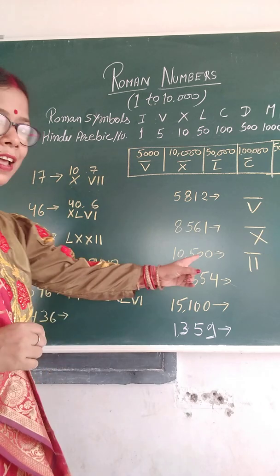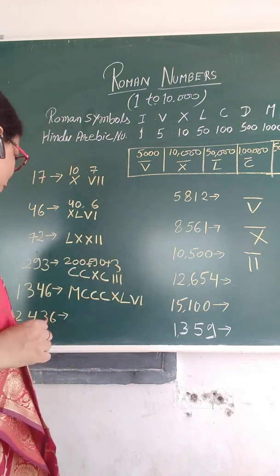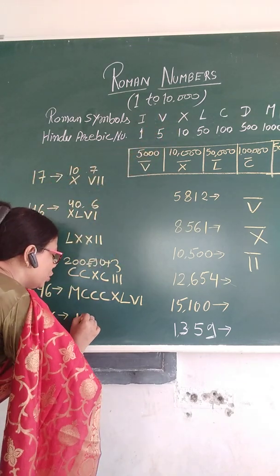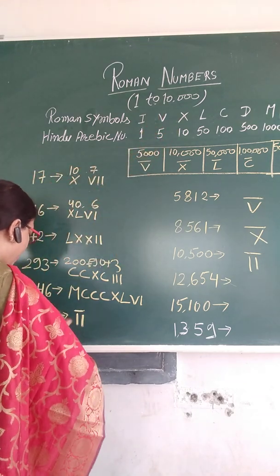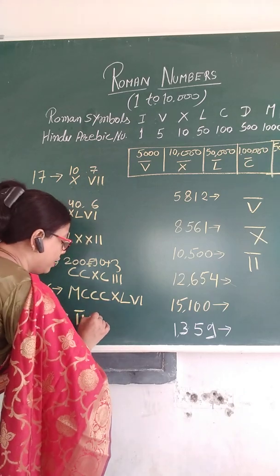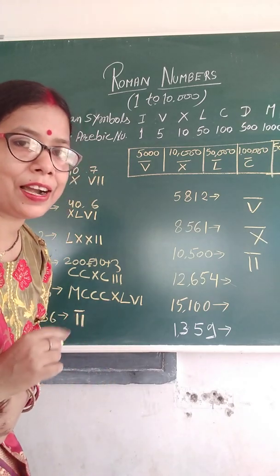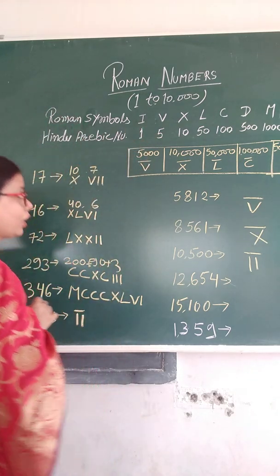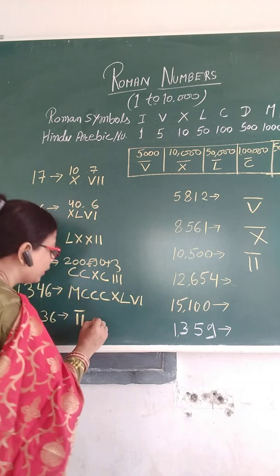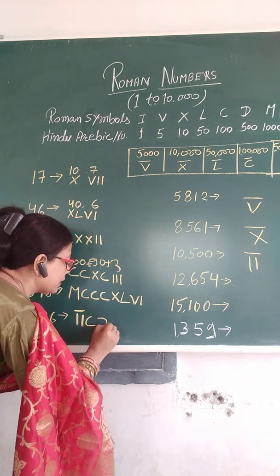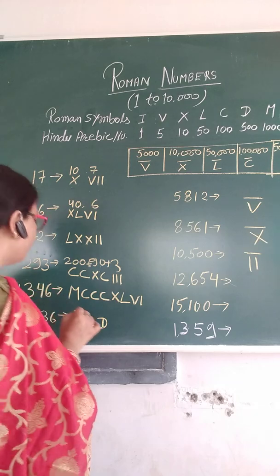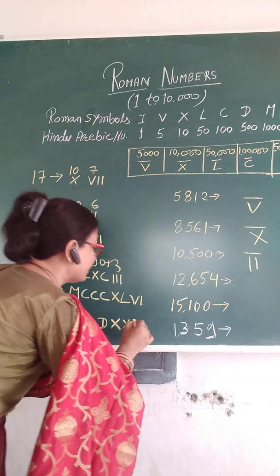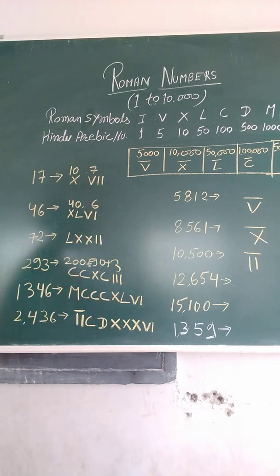For 2000 — abhi abhi bata hai — 1000 is M, and 2000 means 2 M's. 400 means 500 minus 100 — D and C before it, CD. 30 is 3X, and 6 is V and I. So 2436 is MMCDXXXVI.